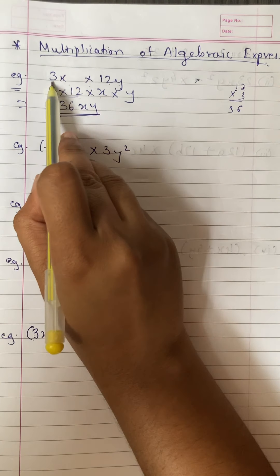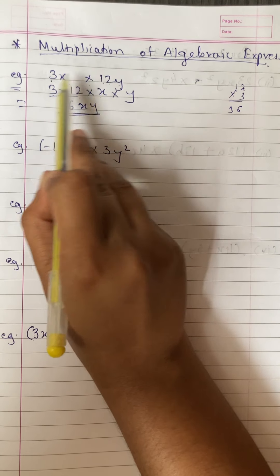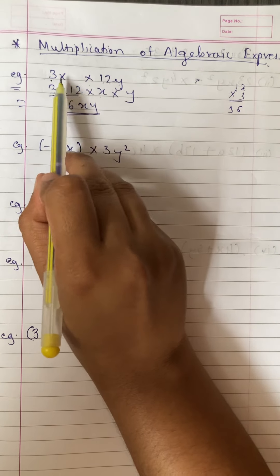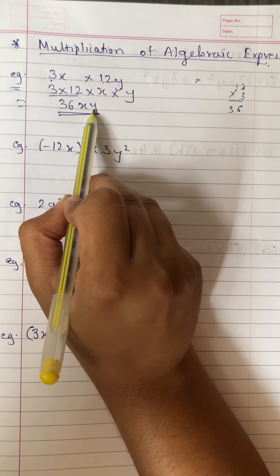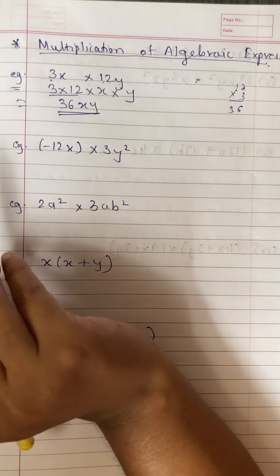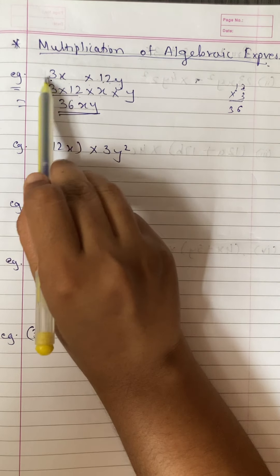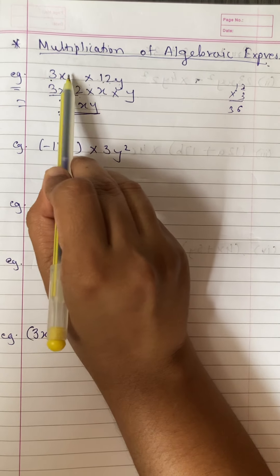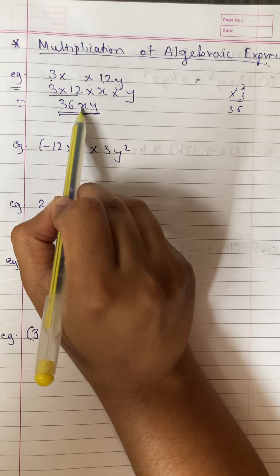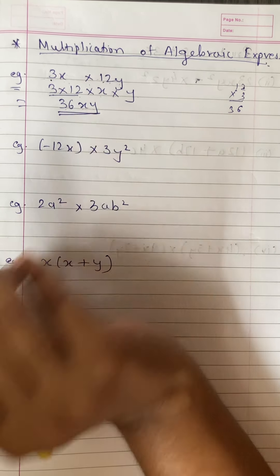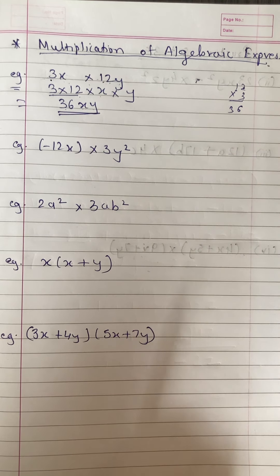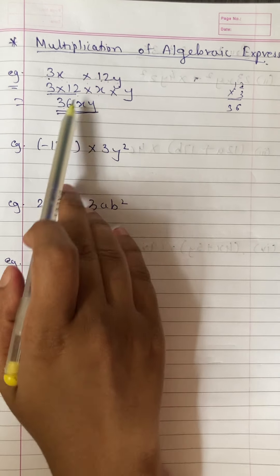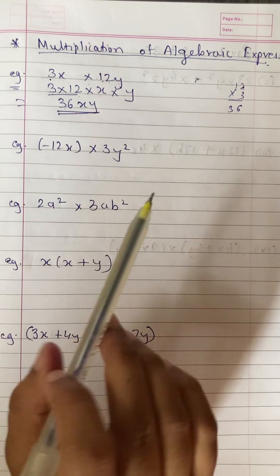Only numbers — we multiply them. And variables, you write them down together. So 12 × 3 is 36, and variables x and y are written together. So the answer is 36xy. It was so easy.